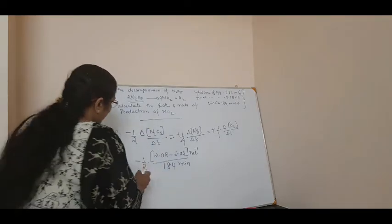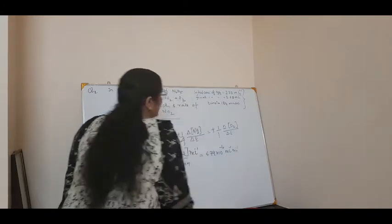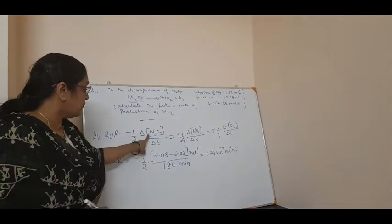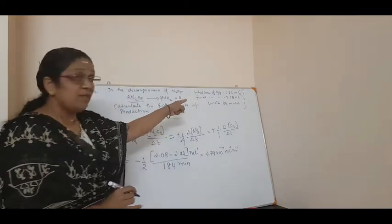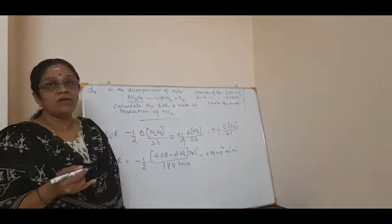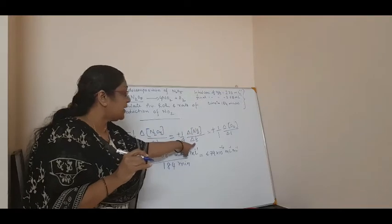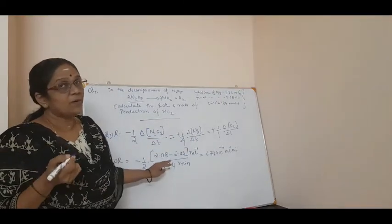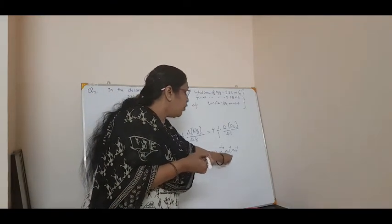On calculating, you will get a value of 6.79 × 10⁻⁴ mol per liter per minute. This is how we calculate the average rate of reaction. The first part is done: the average rate of reaction is equal to 6.79 × 10⁻⁴ mol per liter per minute.